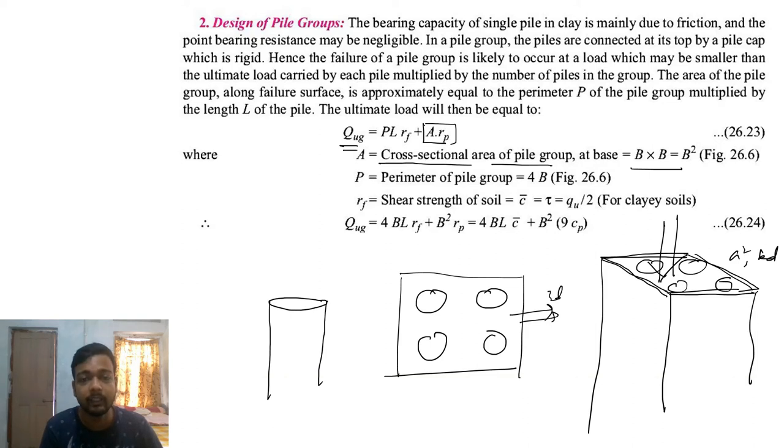Another term is P times L times R_f. What is this? P is the perimeter. Perimeter means friction acts there, so this perimeter area-wise the friction works.